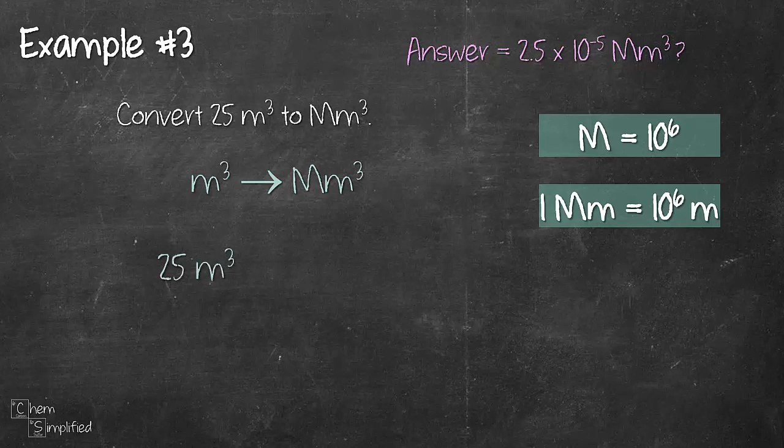Then we start with what's given which is 25 meter cube and then we multiply, draw a line across, and then we place meter at the bottom and mega meter at the top because we want to try and cancel off the meter. So we place a meter at the bottom and we place in the values for the conversion factors.